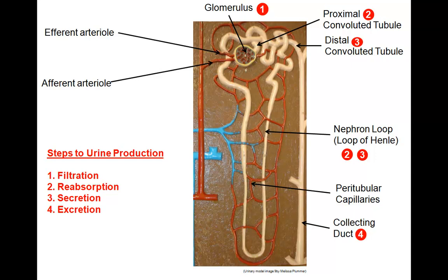Secretion, which takes place primarily along the distal convoluted tubule and the nephron loop, is a backup to filtration in that materials in the blood needing to be removed from the body, such as hydrogen ions, are moved out of the peritubular capillary and then directed into the renal tubule. And finally, the fourth step: excretion of urine from the kidney into the collecting duct to make its way to being eliminated from the body.